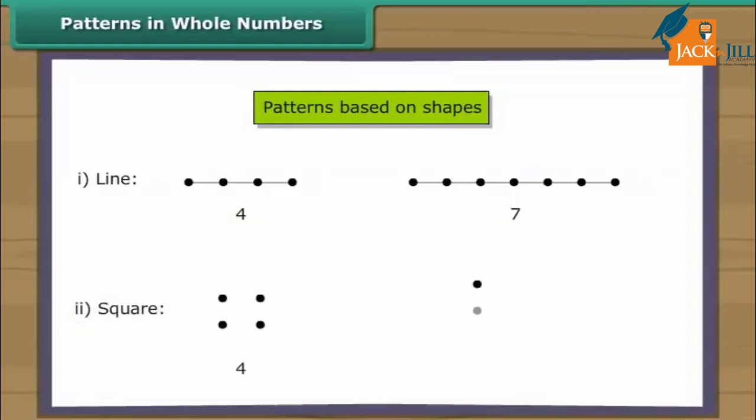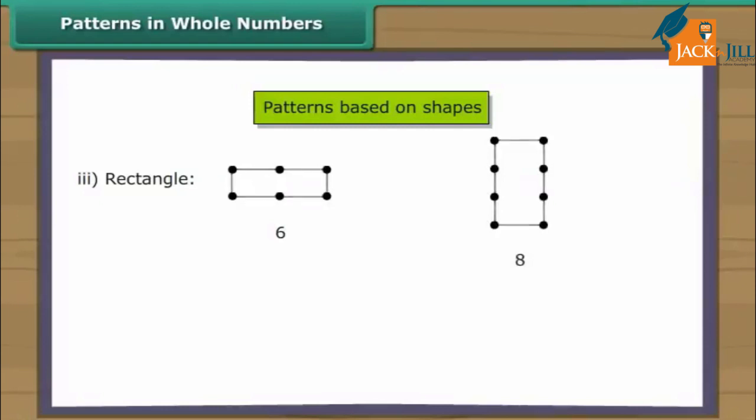Some numbers can be arranged as squares, for example. Some numbers can be arranged as rectangles. Rectangles can be a horizontal arrangement or a vertical arrangement, for example. Some numbers can be arranged as a triangle, for example.